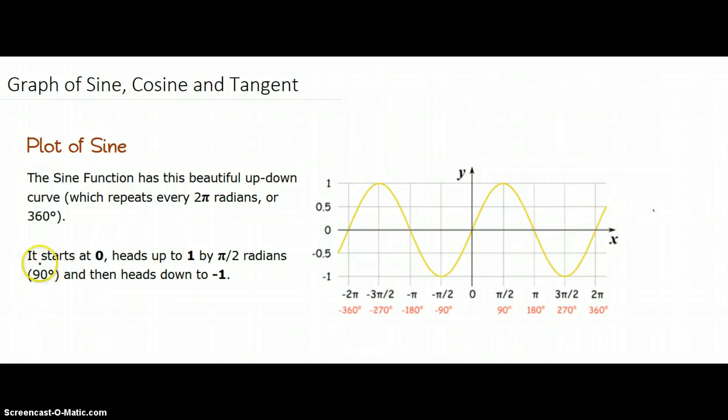If you look here, it starts at zero. I'm drawing a little point at zero. It heads up to one by pi over two, then it goes all the way down to negative one. It goes through zero again at pi, then negative one about three pi over two, and back to zero at two pi. And then it repeats. To graph this by hand, let's look at the unit circle.